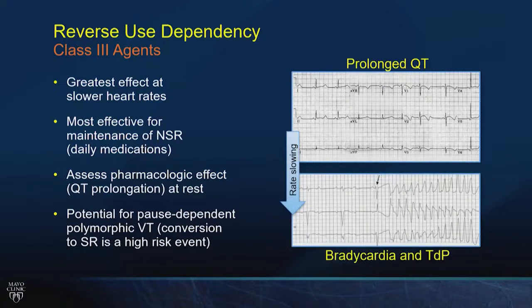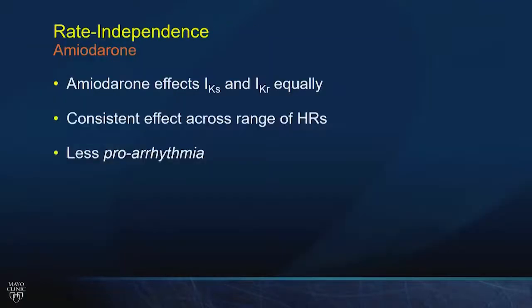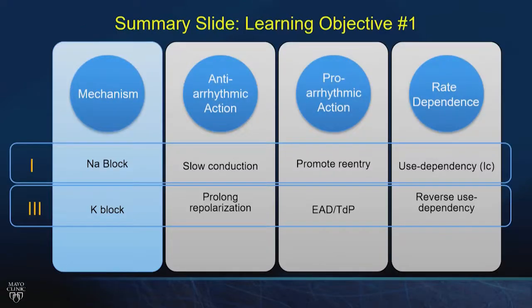That's the initiation sequence, and it's why we have to avoid excess rate slowing with these medications. Amiodarone is less proarrhythmic than other medications because it affects IKS and IKR equally, giving it equal effect across a range of heart rates. It tends to cause these arrhythmias much less frequently, even though it falls into many different classes as an antiarrhythmic drug.